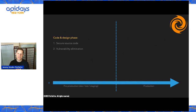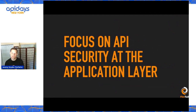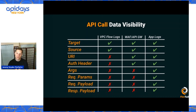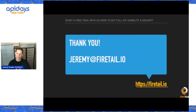As a quick bonus for those at phase two — where does API security fit into a CI/CD pipeline? You've got source code analysis, vulnerability elimination, fuzzing and logic testing pre-launch. At runtime, you want to cover the top attack vectors and have centralized detection and response, contextualizing that into something like a CNAPP or an AppSec program. You want to focus on API security at the application layer as best practice — because only at that layer can you see all the things you need to see. Authentication and authorization are at the app logic layer, and that's where the breaches are happening.